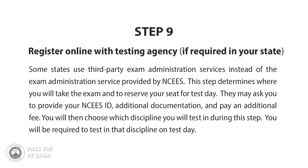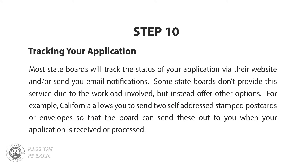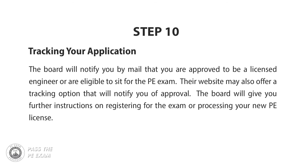You will then choose which discipline you will test in during this step, and again you'll be required to test in that discipline on test day. Step ten: track your application. Most state boards will track the status of your application via their website and possibly send you email notifications. Some state boards don't provide this service due to workload, but offer alternative options. For example, California allows you to send two self-addressed stamped postcards or envelopes so the board can mail them back when your application is received or processed. The board will notify you by mail that you are approved to be a licensed engineer or eligible to sit for the PE exam, and their website may also offer a tracking option.